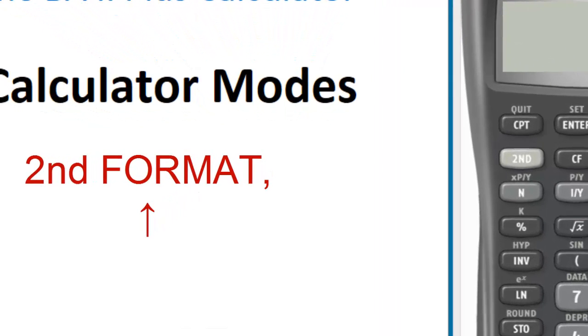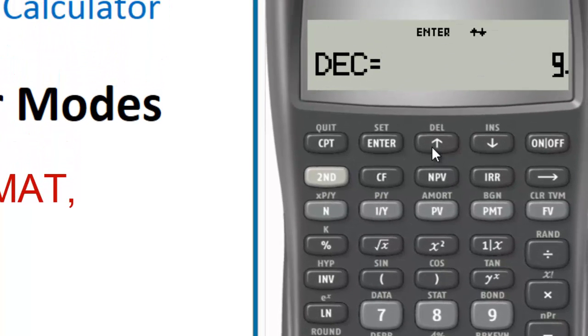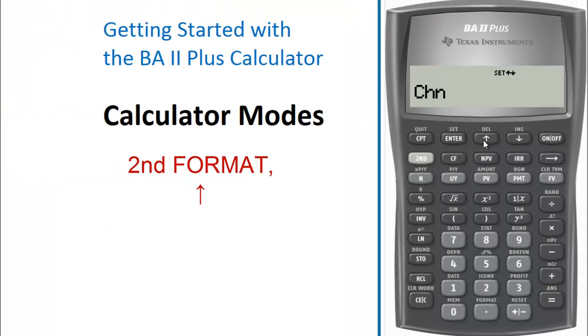Press 2nd Format. Press the up arrow button. The display shows CHN, indicating that the calculator is operating in the chain mode.